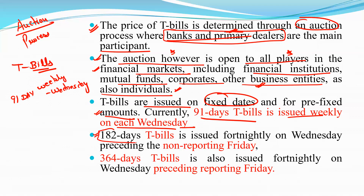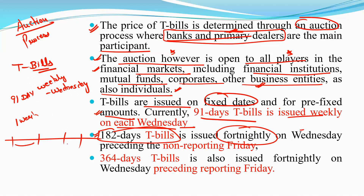The 182-day treasury bill is issued fortnightly on Wednesday preceding the non-reporting Friday. So depending on which week has the non-reporting Friday — first or third week — it is issued on the preceding Wednesday of that fortnight.